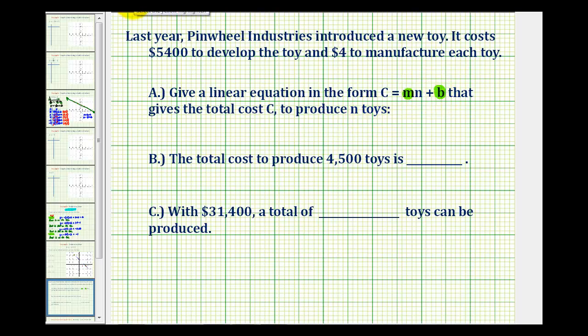Looking at the information that we're given, it costs $5,400 to develop the toy, so this is going to be the cost regardless of how many items we produce. But then there's an extra cost, or the manufacturing cost, of $4 for each toy. So if we produce zero toys, it's going to still cost us $5,400.